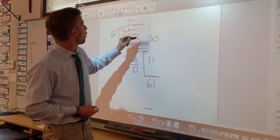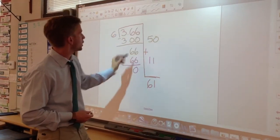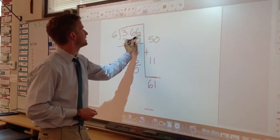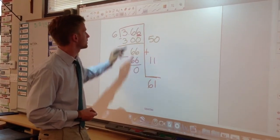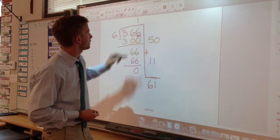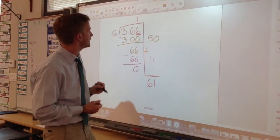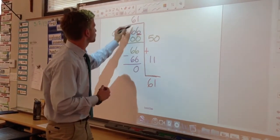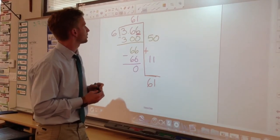and place it over the furthest digit on the right in my dividend, which is the 6. So I make sure that my 1 goes over that furthest right digit, and then my 6 goes right here in the next place.